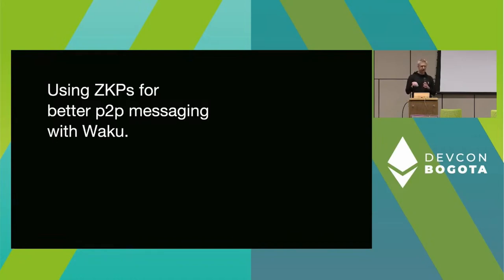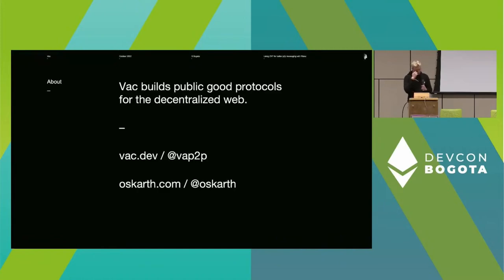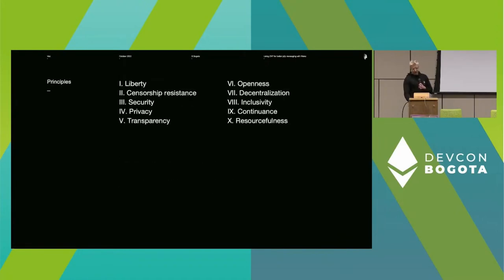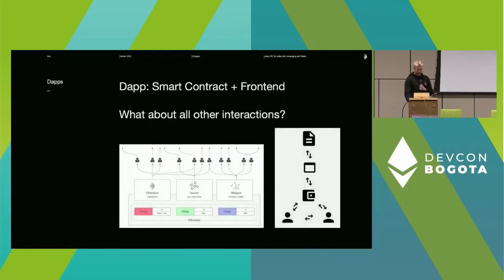As a warning, I gave a talk yesterday that's going to be fairly similar to this one, but this one is going to be slightly more high level and targeted towards DApp developers. So, briefly about Vac and me: I'm Director of Research at Vac. We build public good protocols for the decentralized web with a focus on privacy and communication. We do applied research based on which we build protocols, libraries, and publications, and we're also the custodians of protocols that reflect a set of principles. It has its origins in the Status app, basically trying to improve on the underlying protocols and infrastructure.